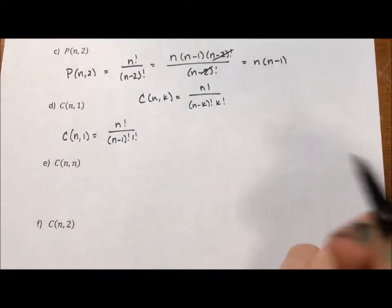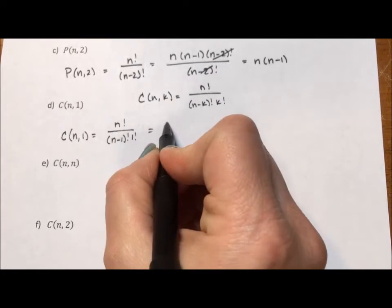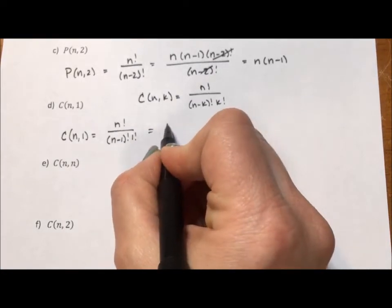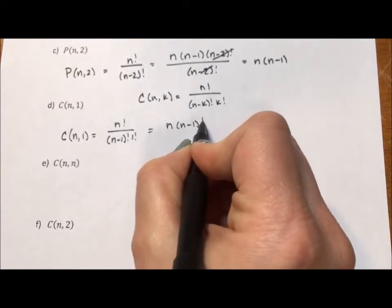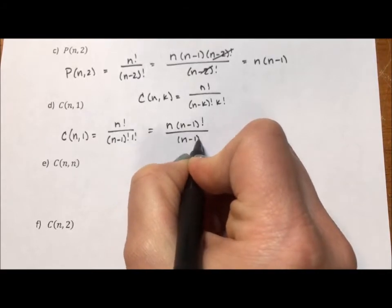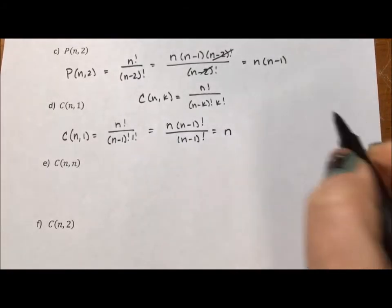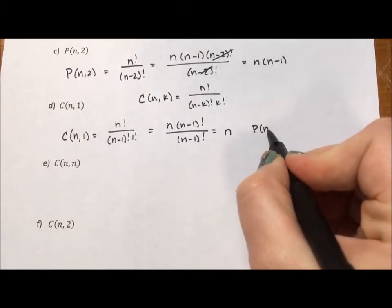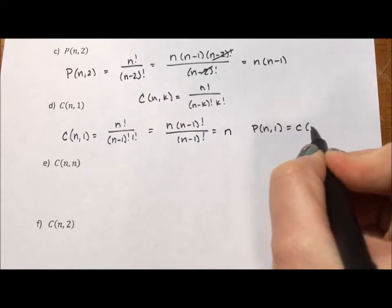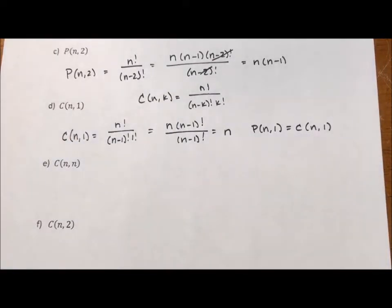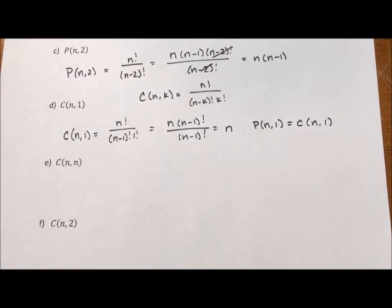So, C of n,1 is n factorial over n minus 1 factorial 1 factorial. Well, 1 factorial is just 1. So, if we go back to what we were doing with the permutations, this is n times n minus 1 factorial over n minus 1 factorial, which is n. So, permutation of n taken one at a time is equal to the combination of n taken one at a time. And that's pretty much where their equality ends.